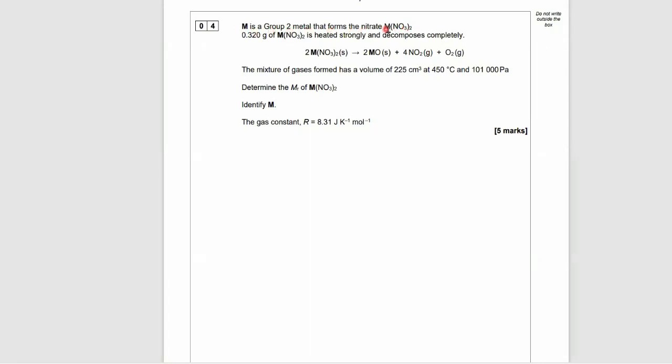M is a group 2 metal that forms the nitrate M(NO3)2. 0.320 grams of M(NO3)2 is heated strongly and decomposes completely. 2M(NO3)2 solid decomposes to metal oxide plus 4 nitrogen dioxides and 1 oxygen gas molecule.